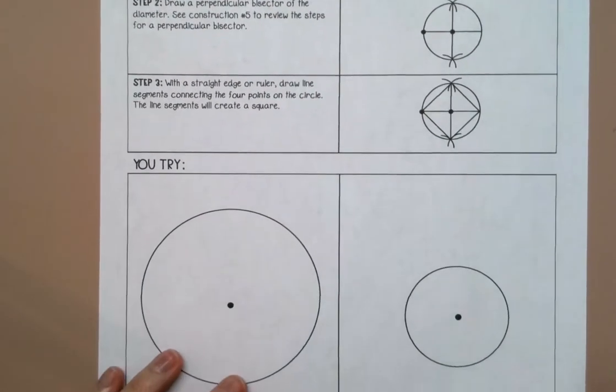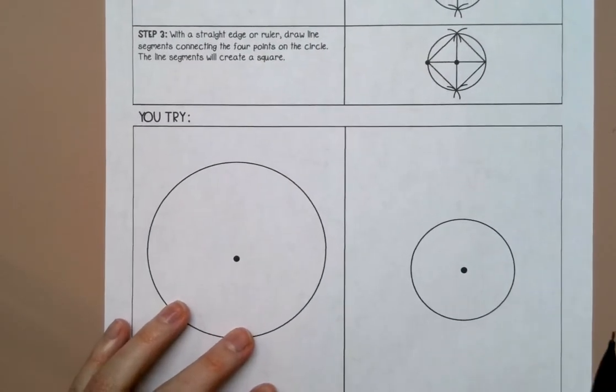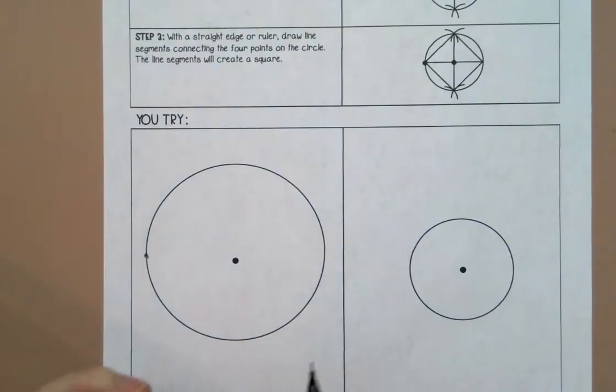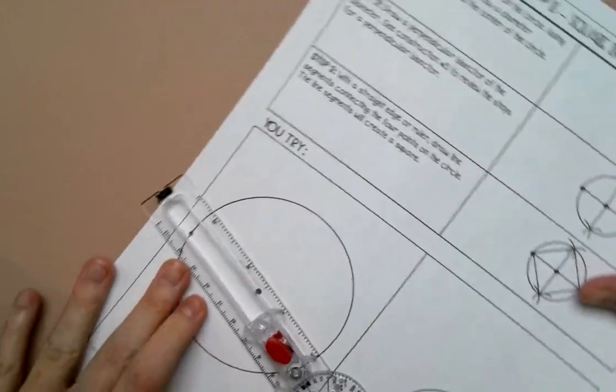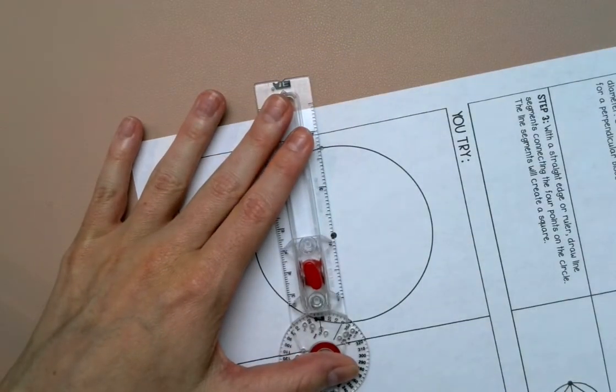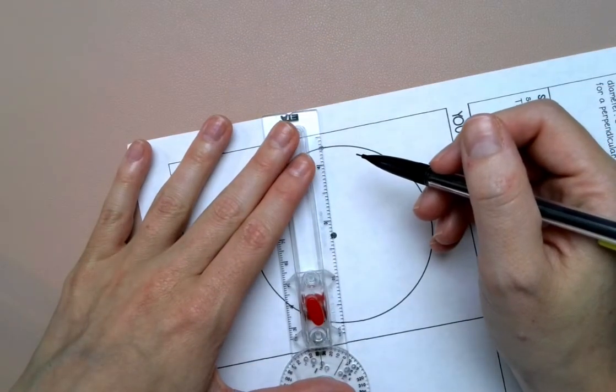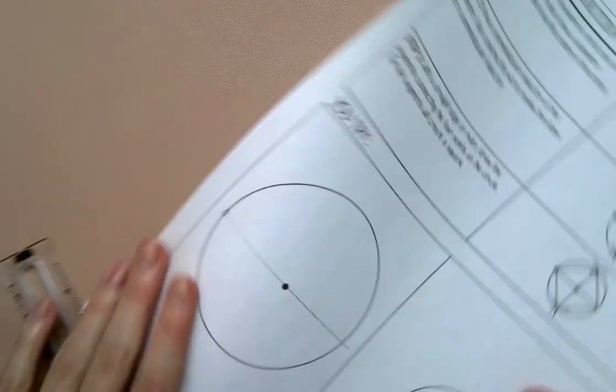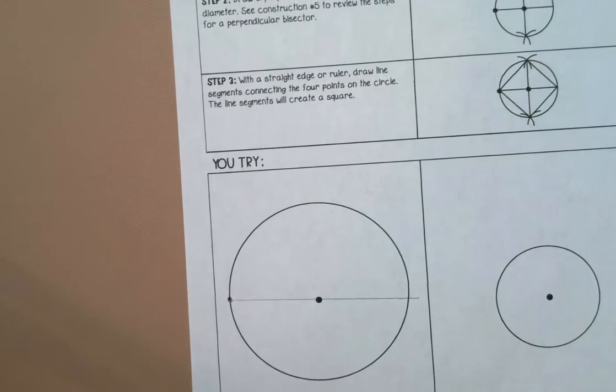So let's actually try that with an example. So I'm going to draw a point and then I'm going to draw a diameter. If it goes outside the circle a little bit, that's okay.